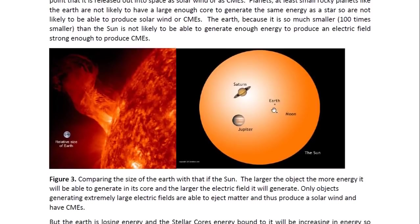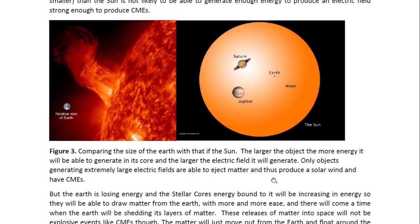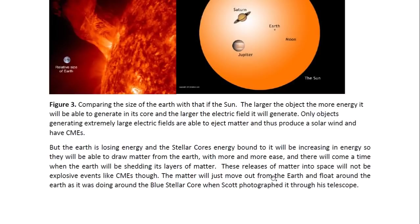You can see here how small the Earth is in comparison with the whole sun — it's just like a little speck. But the Earth is losing energy to the stellar cores, and the stellar cores, which are energy-bound to it, will be increasing in energy. So they will be able to draw matter from the Earth with more and more ease, and there will come a time when the Earth will be shedding its layers of matter. These releases of matter into space will not be explosive events like CMEs, though.